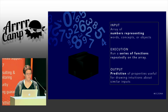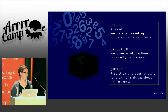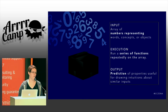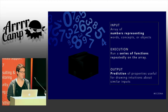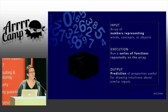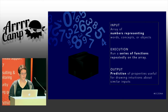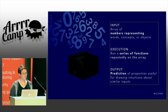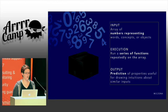What that means in particular is you've got inputs that are just an array of numbers representing something — it might be an object, it might be words, it can be much more abstract concepts. You're running a series of functions repeatedly on the array, iterating to get more and more fine-grained in what it's analyzing. Then you have output that is a prediction of properties useful for drawing intuitions from future data sets, as long as they're similar to that training data set.